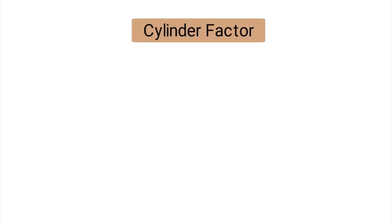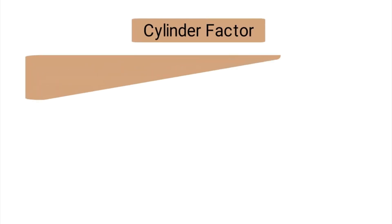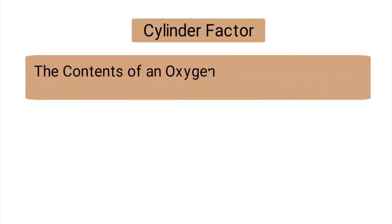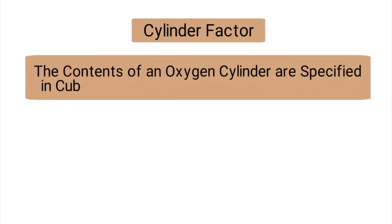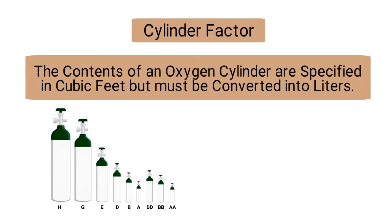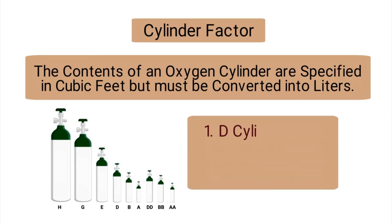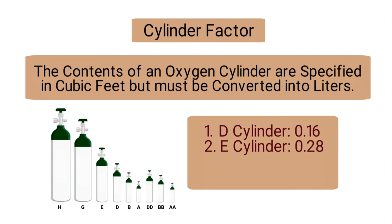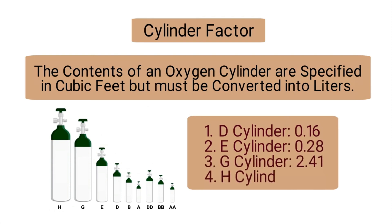The contents of an oxygen cylinder are specified in cubic feet but must be converted into liters. Therefore, each tank size has a different cylinder factor, including the following: D cylinder is 0.16, E cylinder is 0.28, G cylinder is 2.41, and H cylinder is 3.14.